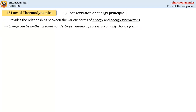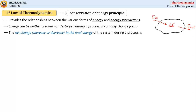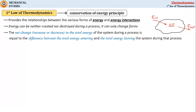When we say energy is conserved, what does it mean exactly to a physical system? Let us consider a system that involves energy transfer in and out across the system boundaries. Energy entering into the system is represented as E_in and energy leaving the system is represented as E_out. This energy transfer causes a change in the total energy of the system, that is delta E. The net change — increase or decrease — in total energy of the system during a process equals the difference between total energy entering and total energy leaving the system during that process.